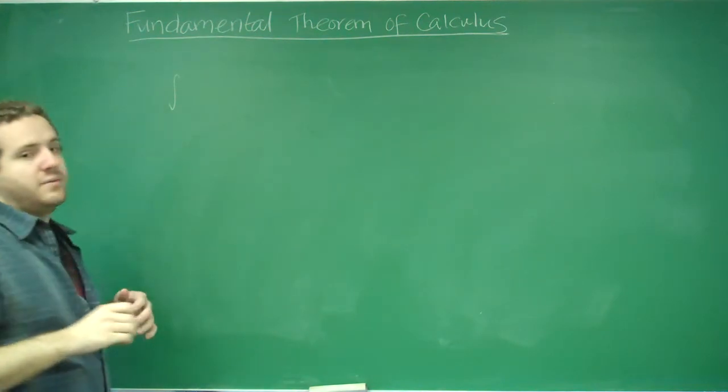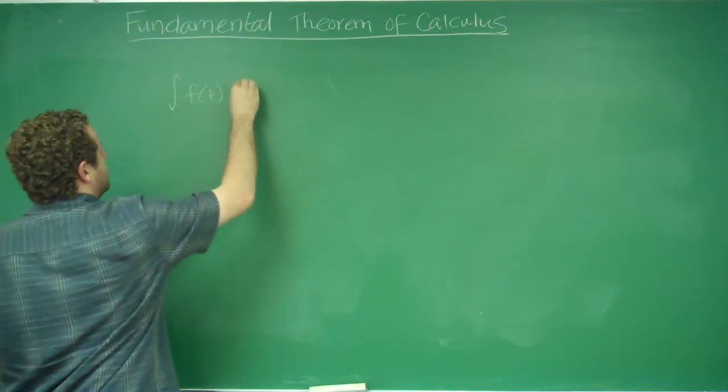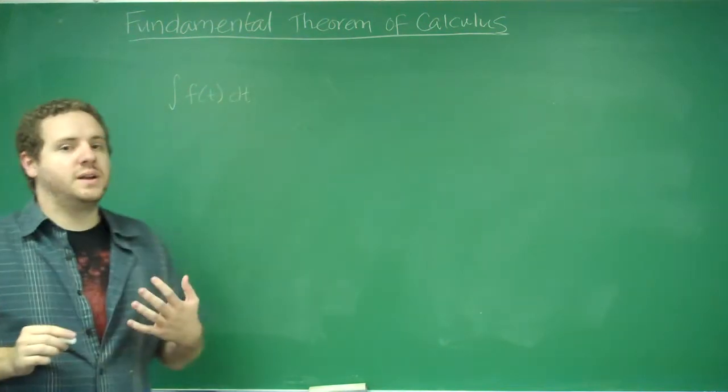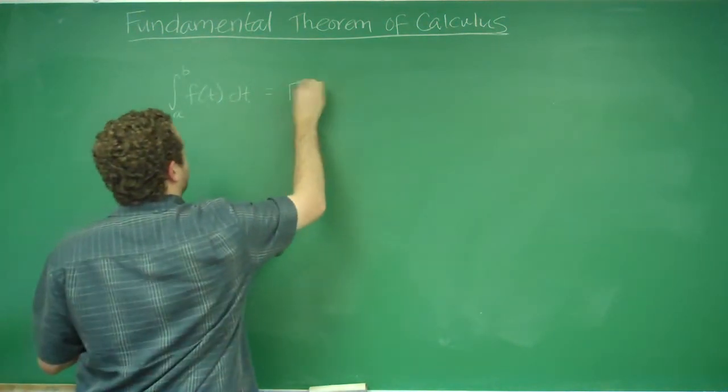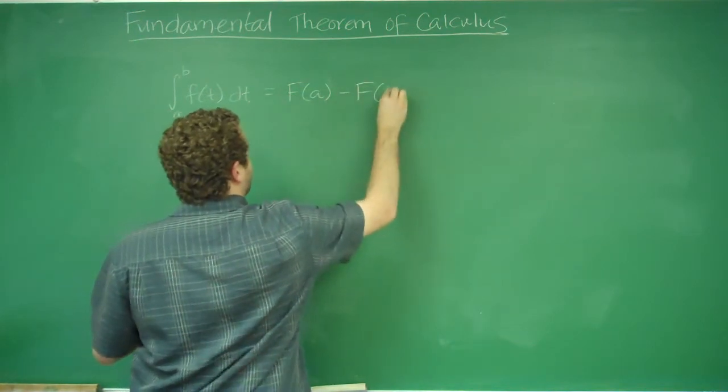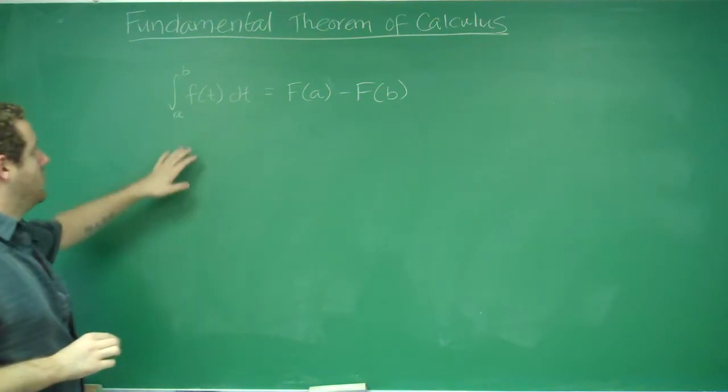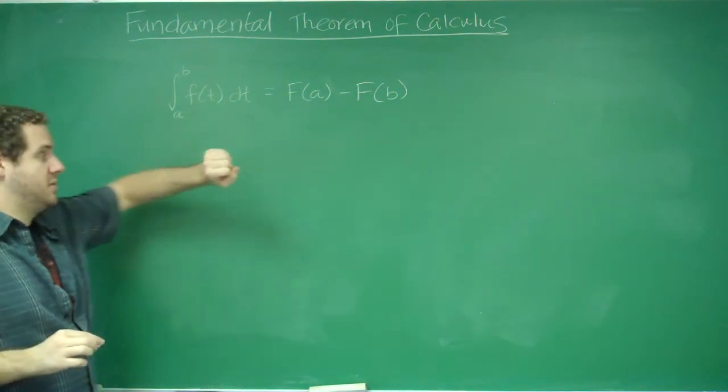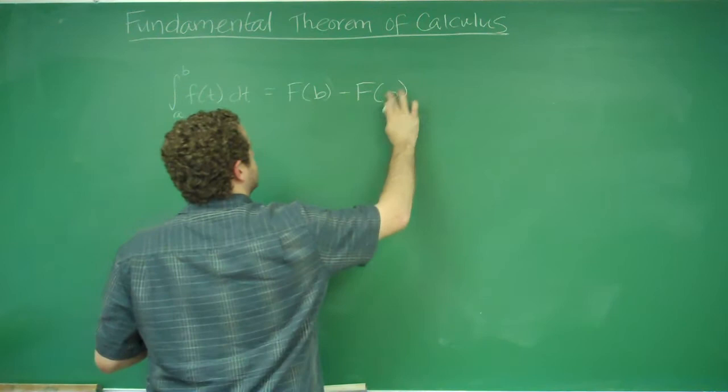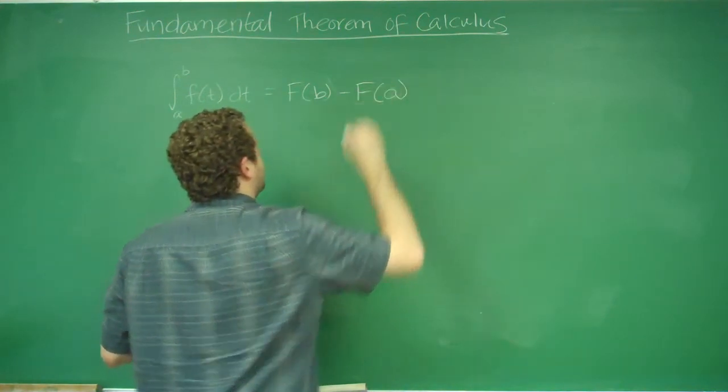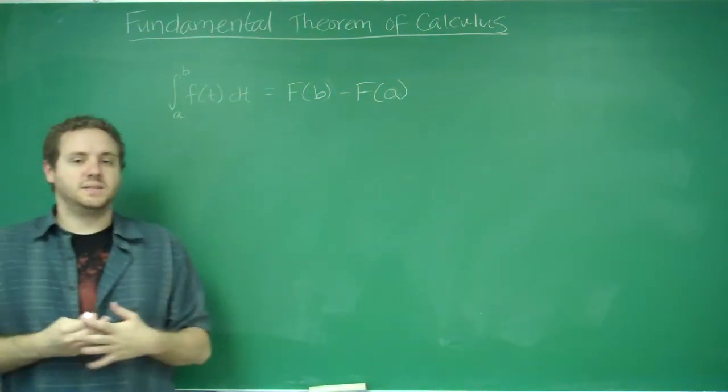So the Fundamental Theorem of Calculus first states that if you have some function f of t dt, and you integrate it from any a to b, you get capital F of b minus F of a. So this is the anti-derivative of this. You evaluate it at the upper bound and you evaluate it at the lower bound and take the difference of them.